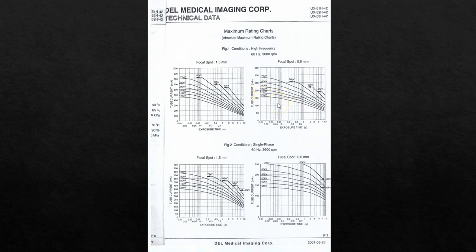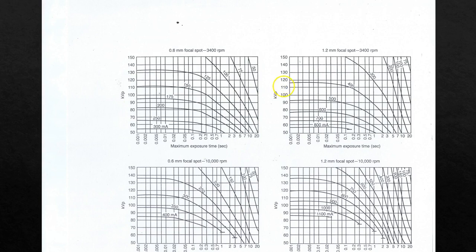Again, that's fine — we don't typically use 100 KVP for extremities anyway. We're going to probably be using about 70 KVP. And as you can see at 70 KVP, I'm allowed to go up to almost 300 MA on a short exposure time. The curve isn't all that steep, so I can have about a 1/10th of a second exposure time at 300 MA.